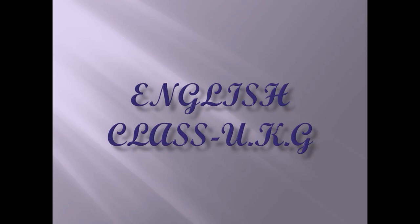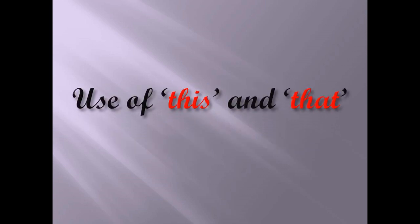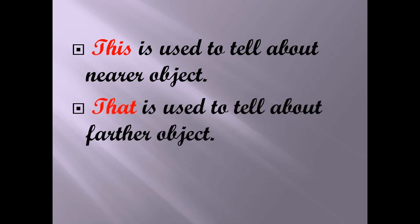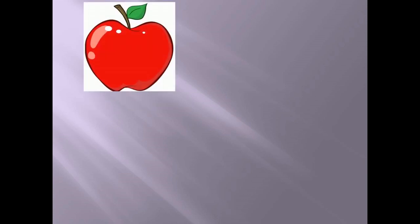Hello students, how are you? Today we will study English. We will learn the use of 'this' and 'that.' 'This' is used to tell about a nearer object, which means any object or thing which is near to us, we will use 'this.' 'That' is used to tell about a further object, which means any object or thing which is far from us, we will use 'that.'